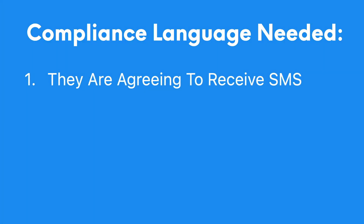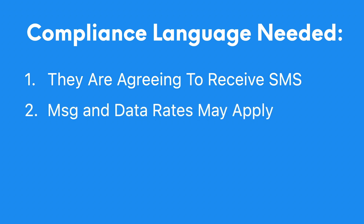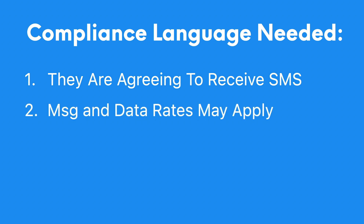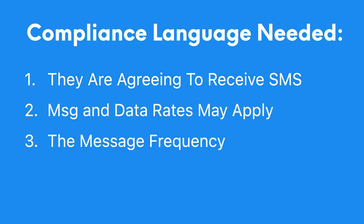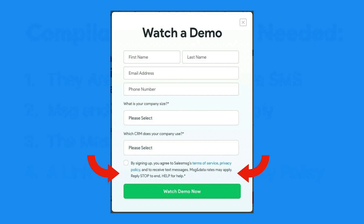There needs to be some notification to the person opting in that they're agreeing to receive SMS messages and that data rates may apply, the message frequency or that message frequency may vary, and a link or URL to the terms and privacy policy on your website. With a web form, this process is really easy because you can put all of this information in the form itself, like in this example where you can see the compliance language on the form.